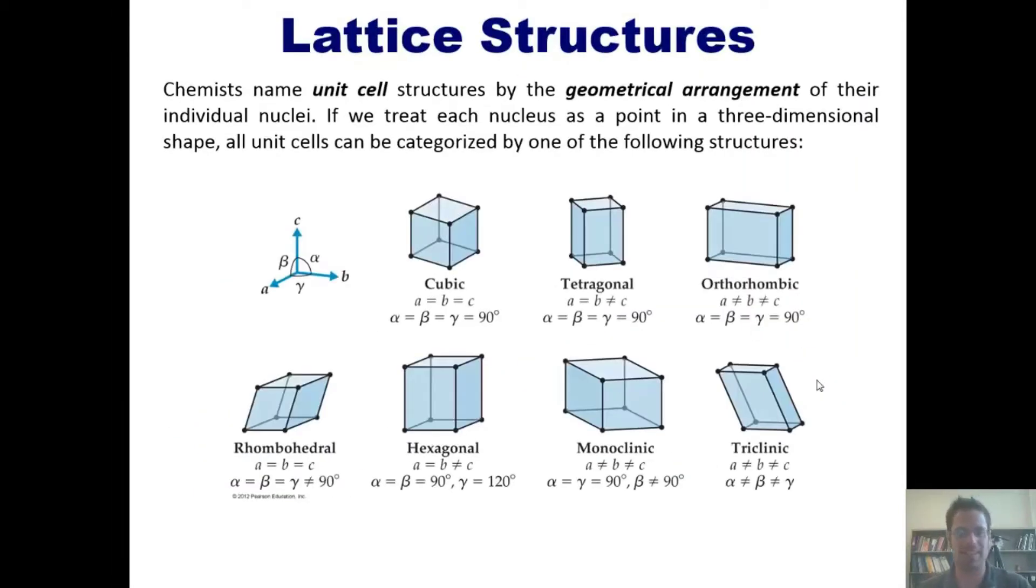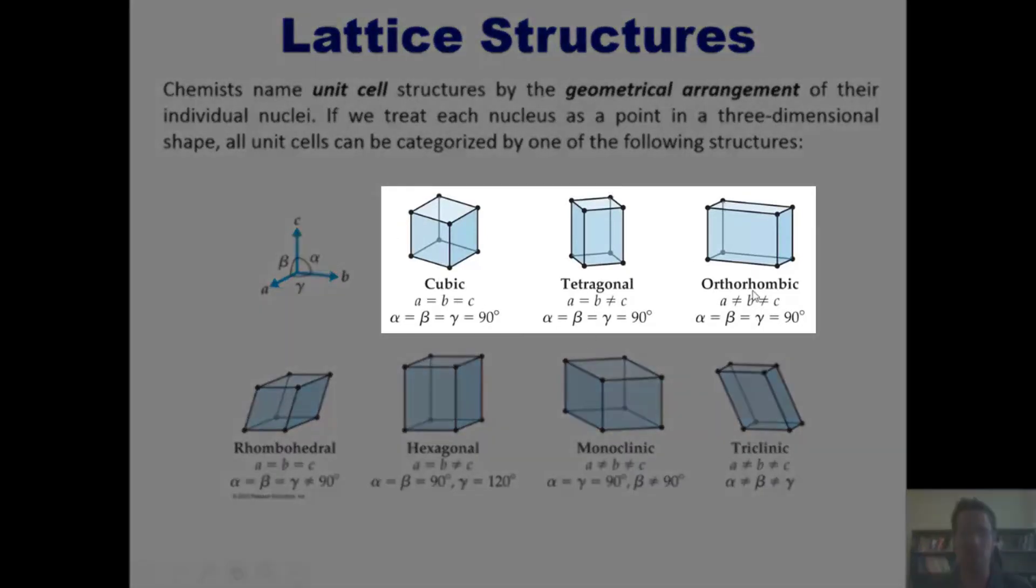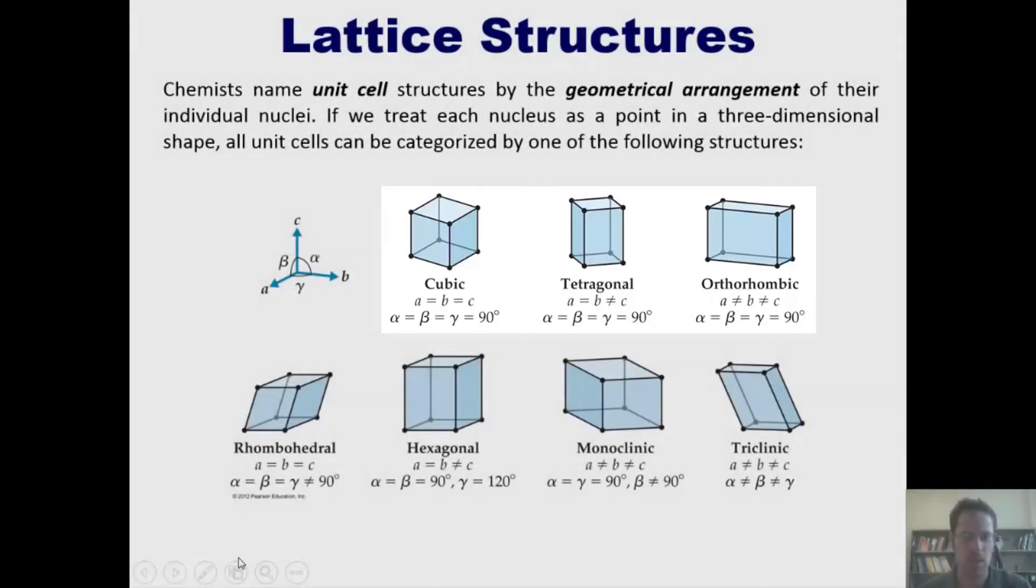All the unit cells shown in this upper group all have 90 degree angles at every single vertex, which does not match what we've seen. What we're looking for is one that has 90 degrees at most of the vertices but 120 at the vertices that are interior.